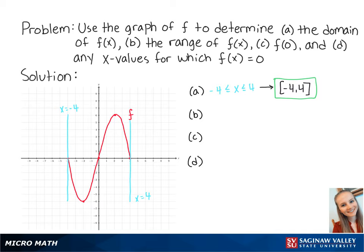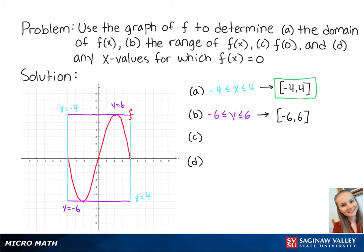For letter b, the range of f of x is the set of all y values within the function. Looking at the graph, we can see that the smallest value of y is negative 6 and the highest value of y is positive 6. Since the range is inclusive on both endpoints, we can write this as [-6, 6] with brackets on both endpoints.